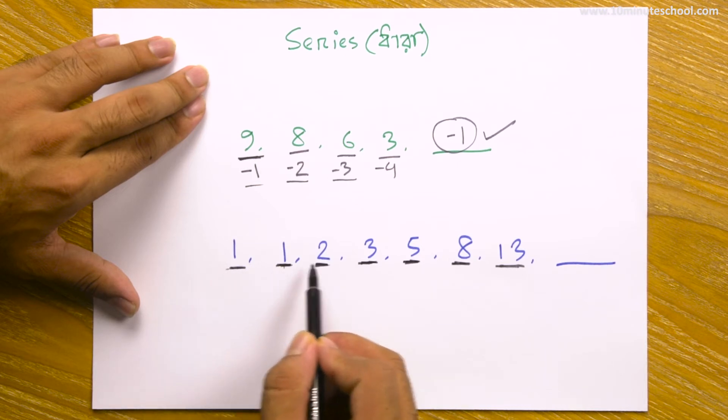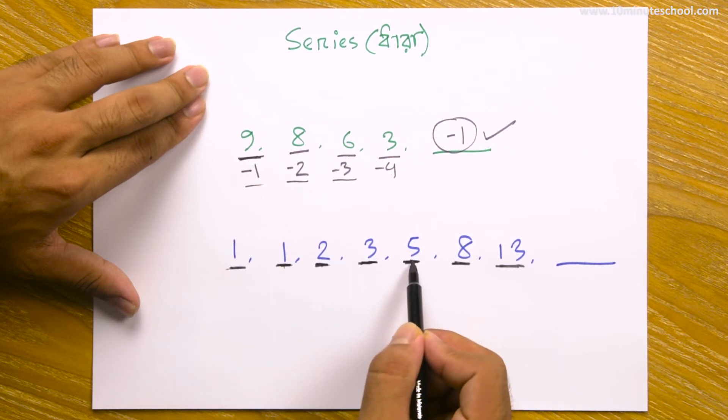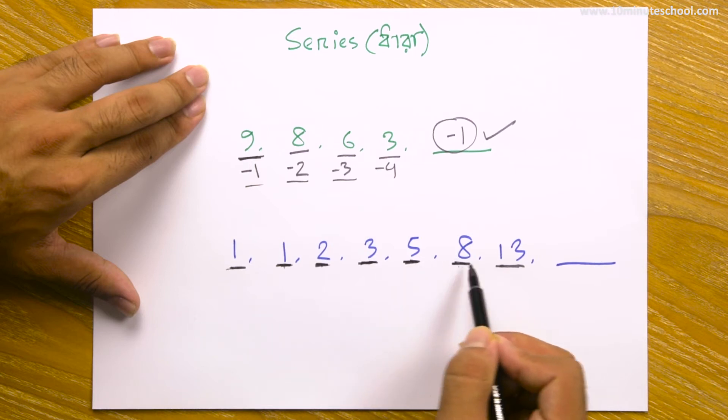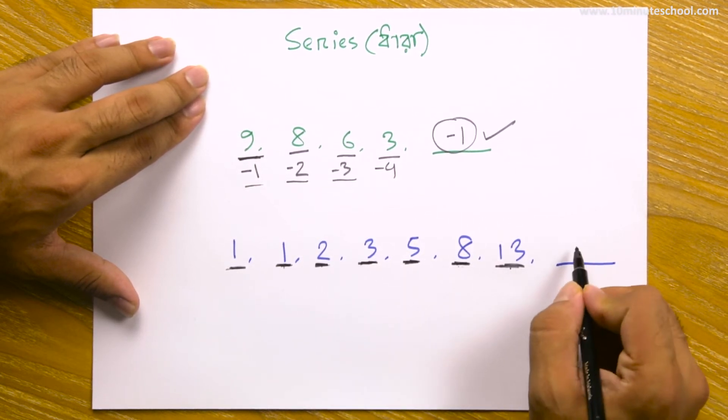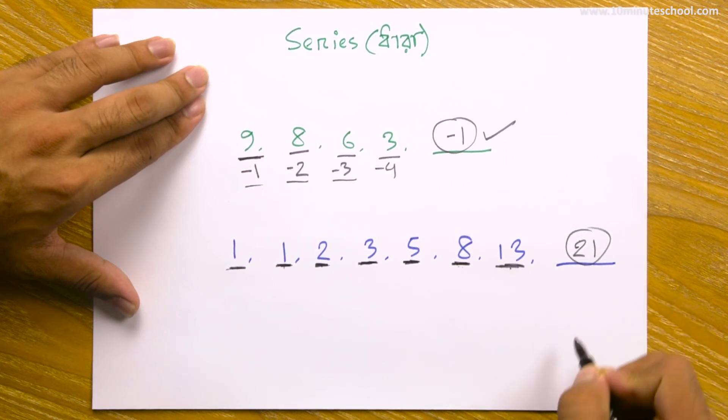In Fibonacci: 1, 1, 2, 3, 5, 8, 13. How much is 8 plus 13? 21, so 21 is our answer.